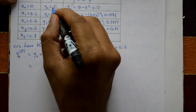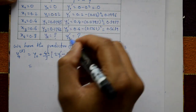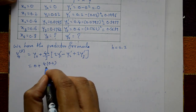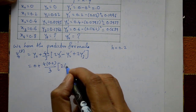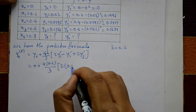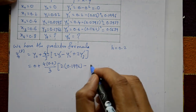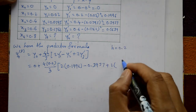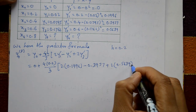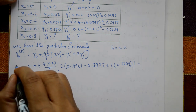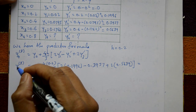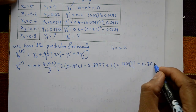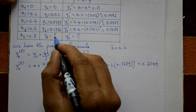Substituting the values: y4(P) = 0 + (4 × 0.2 / 3) × (2 × 0.1996 - 0.3937 + 2 × 0.5689). The computed y4 predictor value is 0.3049.